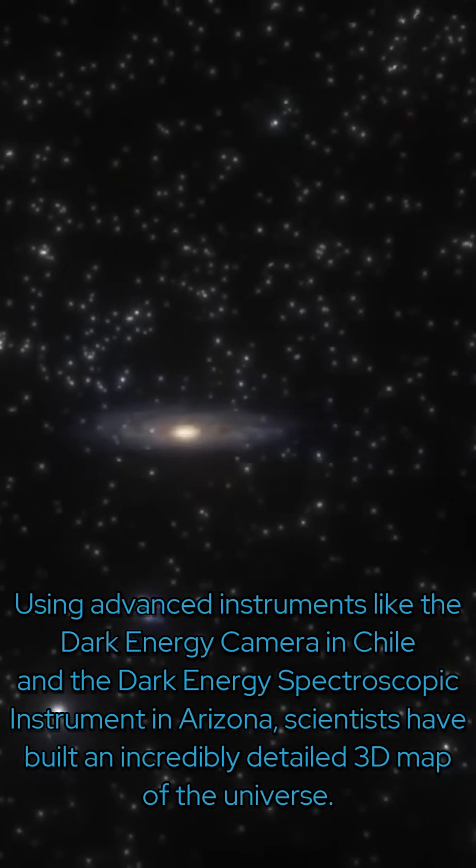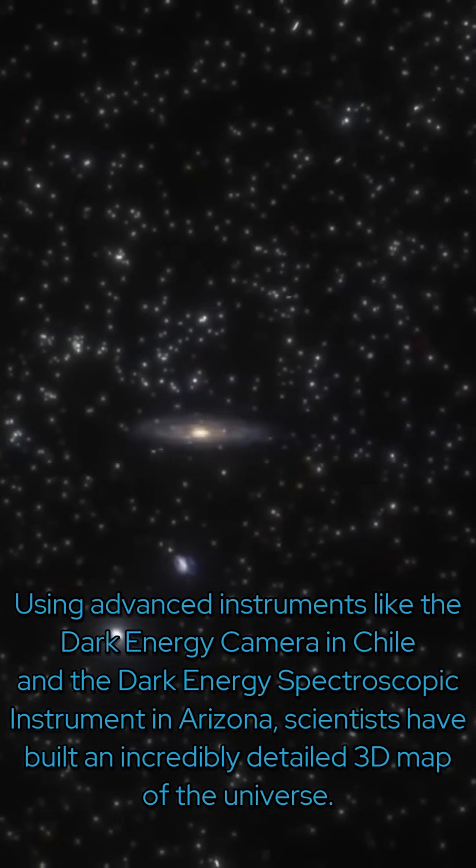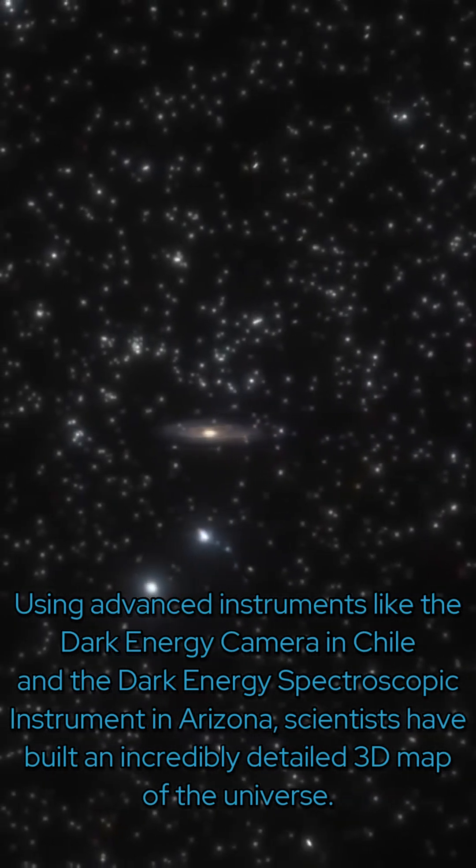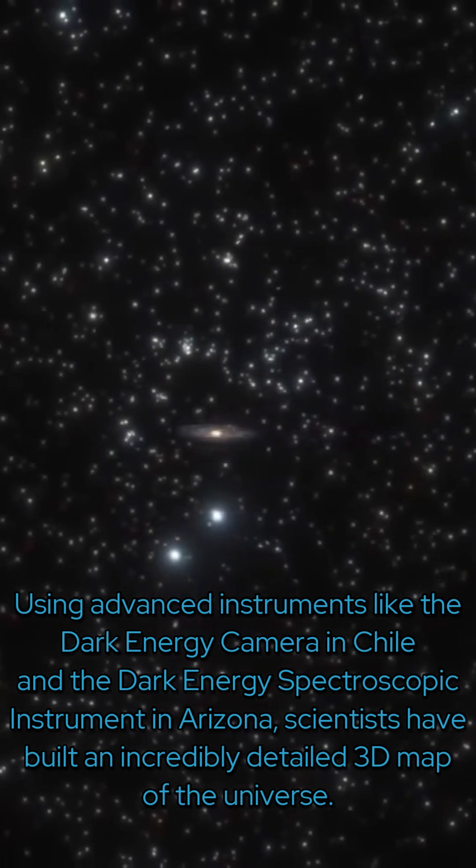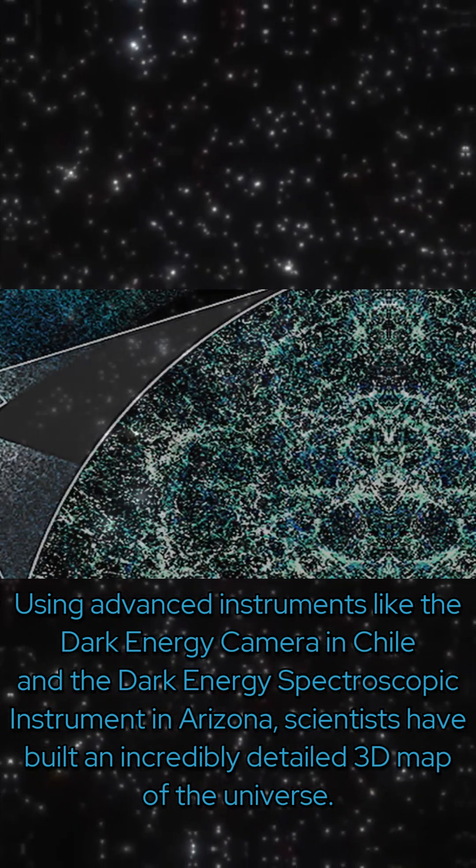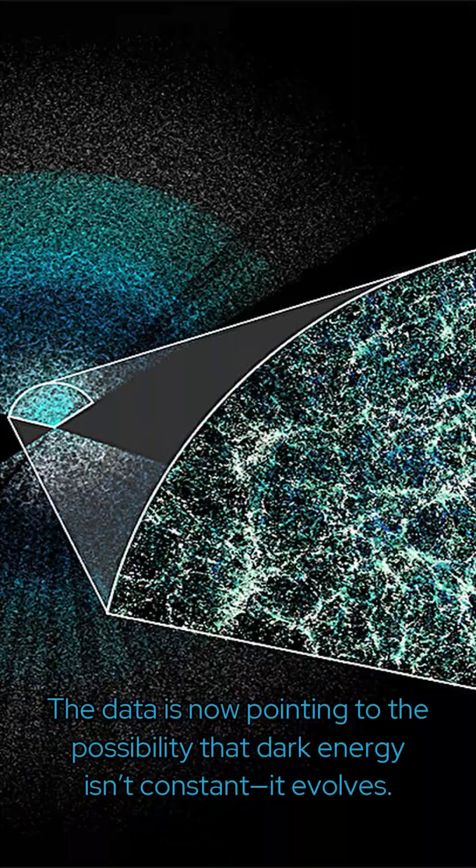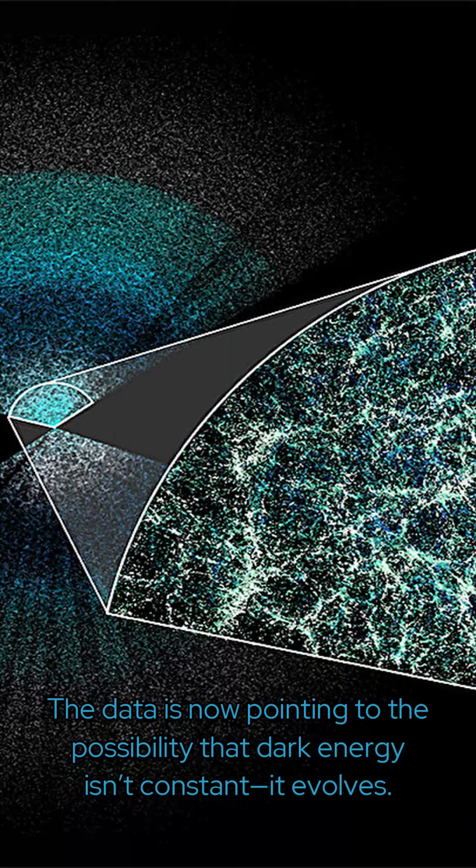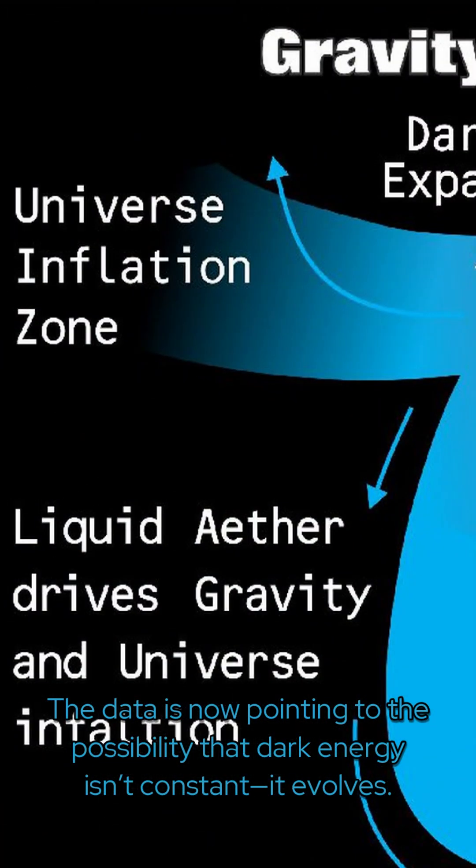Using advanced instruments like the Dark Energy Camera in Chile and the Dark Energy Spectroscopic Instrument in Arizona, scientists have built an incredibly detailed 3D map of the universe. The data is now pointing to the possibility that dark energy isn't constant. It evolves.